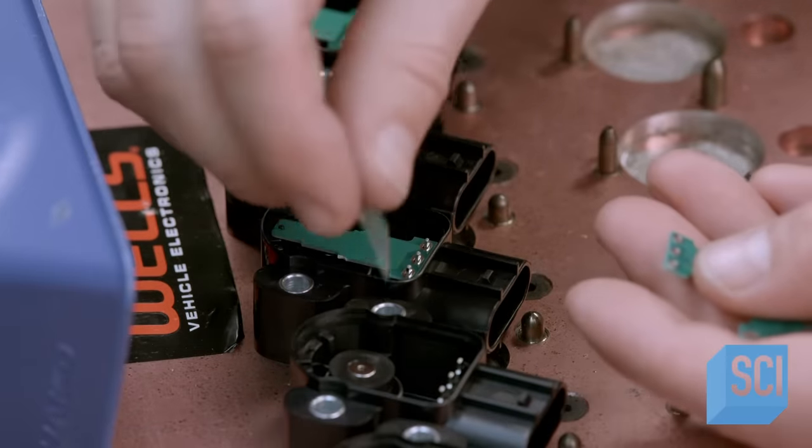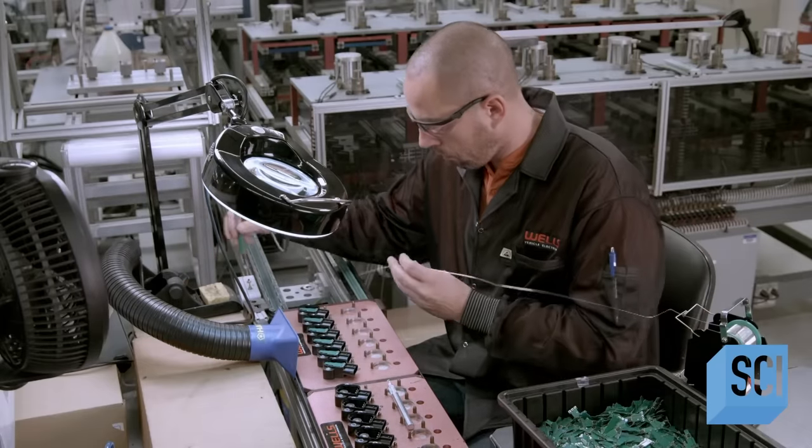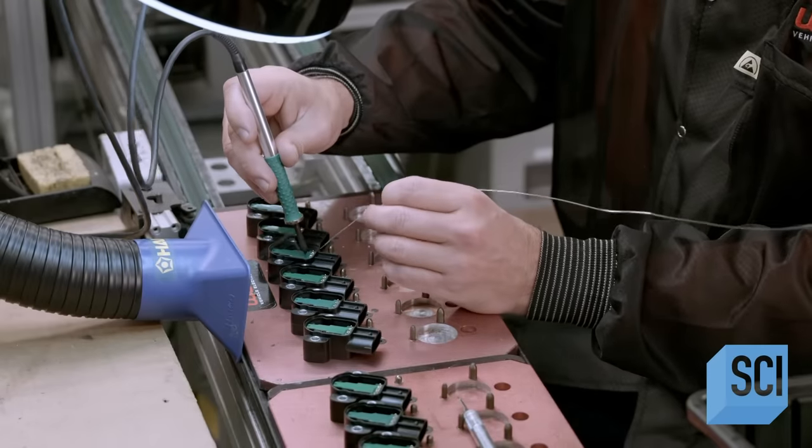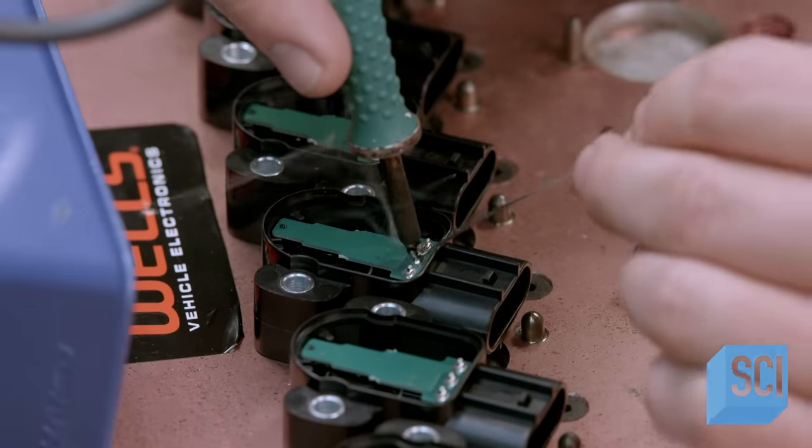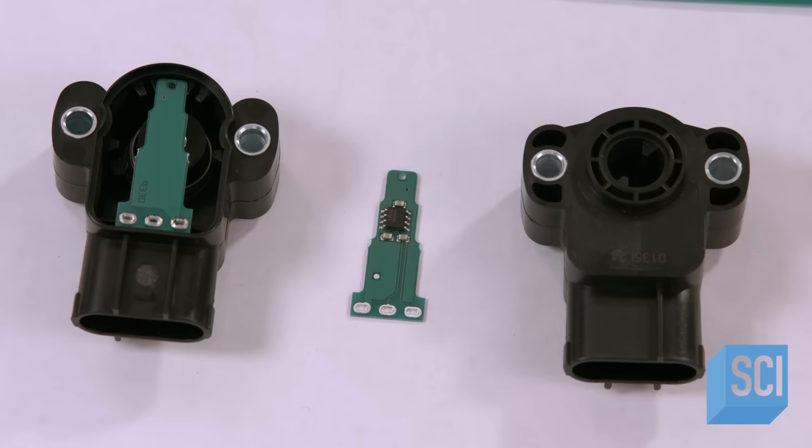Terminals in the housings mate to slots in the boards. He solders the terminals to the boards to establish the connections. All the parts are now in place for throttle position sensing.